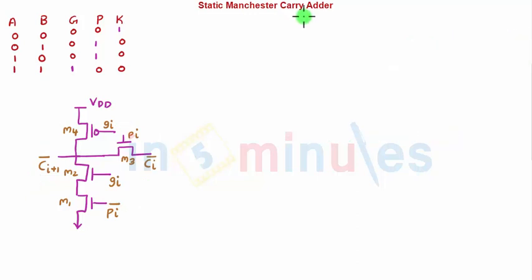Okay, let's go to Case 3. Case 3 is very interesting. My propagate signal is 1, which means my generate is 0 and my kill is 0. In this case, we want our cout to be equal to cin.